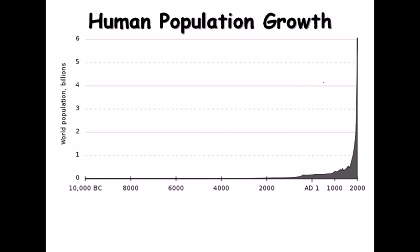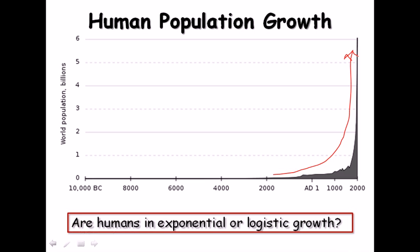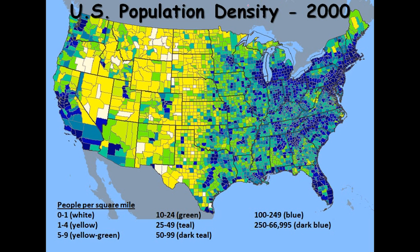Looking at human population growth, the curve shows exponential growth from around 2000 BC through the AD era to the present. However, the human population is now getting very large and resources are limited, so competition, conflict, and other limiting factors are increasing. A fall in population growth is expected in the near future, transitioning to logistic growth.